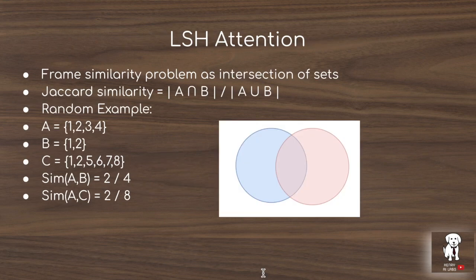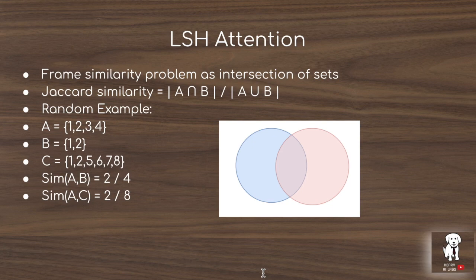The idea of LSH attention is to approximate full attention by only multiplying queries by the most similar keys, which will dominate the full attention dot product anyway, especially after passing through the softmax. Locality-sensitive hashing frames the similarity problem as an intersection of sets. This algorithm is applicable to plagiarism detection, collaborative filtering, and nearest-neighbor image search where low-dimensional vector representations are compared to find the most similar images.